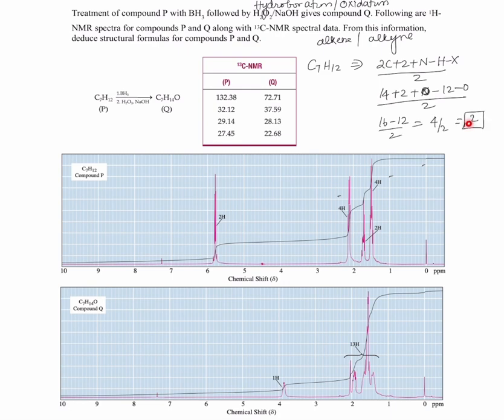It has a total of 2 degree of unsaturation which tells us that it could be a double bond and a ring or it could be a triple bond. So these are the possibilities.